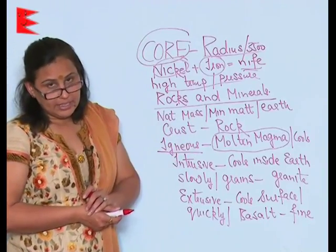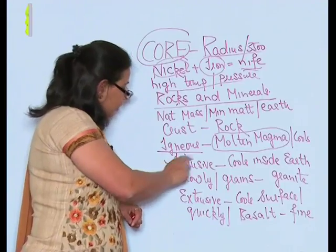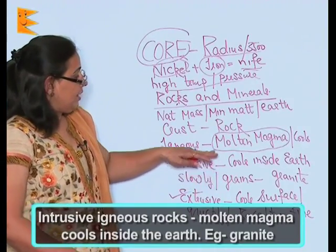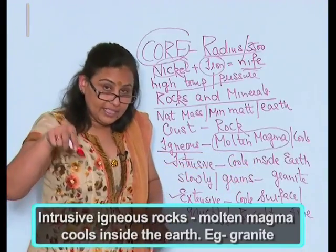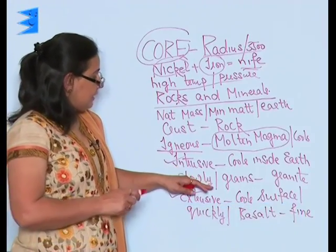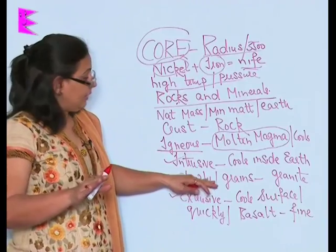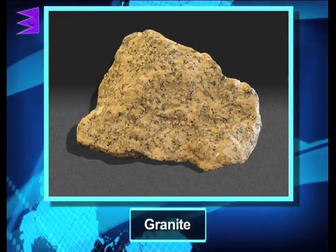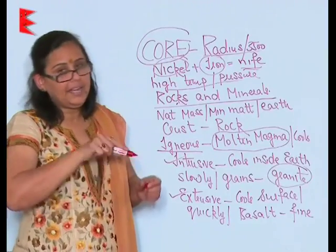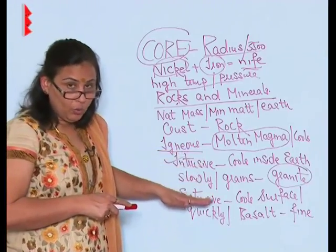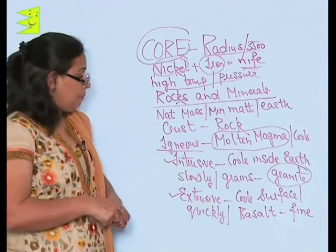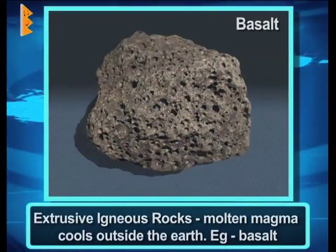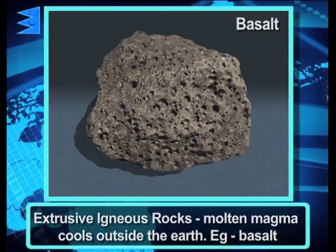Igneous rock is subdivided into two types: intrusive and extrusive. Intrusive igneous rocks are those where molten magma cools inside the earth. Since it cools very slowly, the grains are long-structured. The best example is granite. Extrusive igneous rock is formed when magma cools on the surface of the earth.